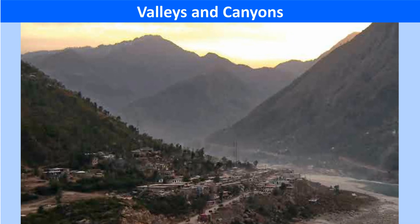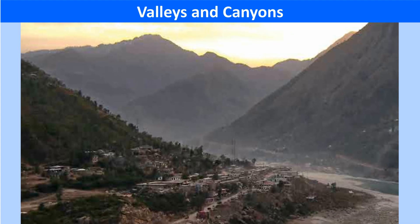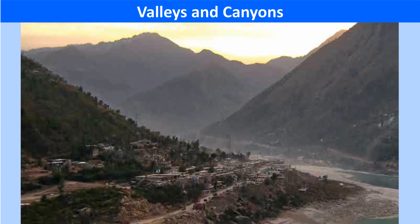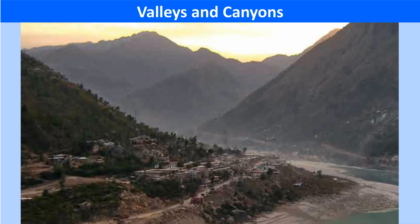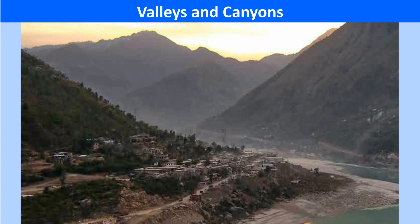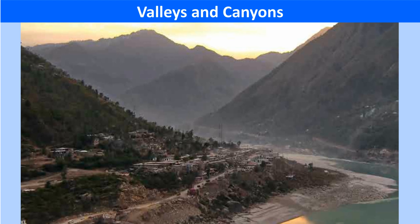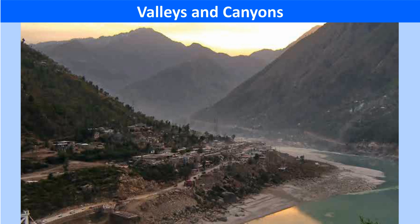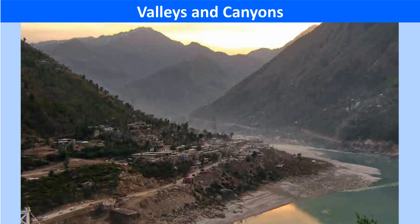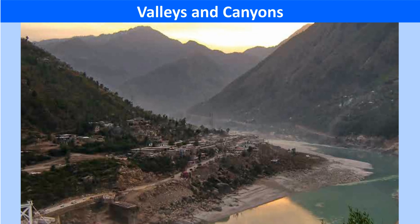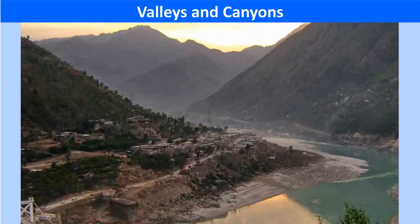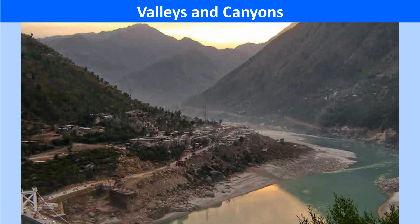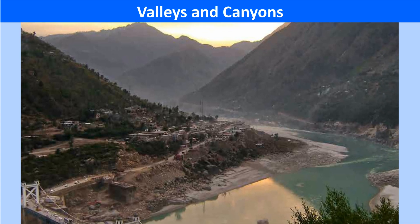In its middle course, the river reaches the plains where the valley gets widened. Hence, the slope in the plains is not as steep as in the mountains. The speed of the river also decreases, and movement on an uneven land surface forces the water to move irregularly, leading to the creation of loops or meanders.